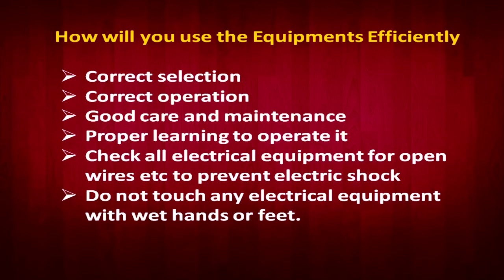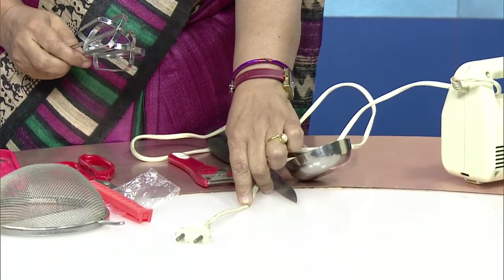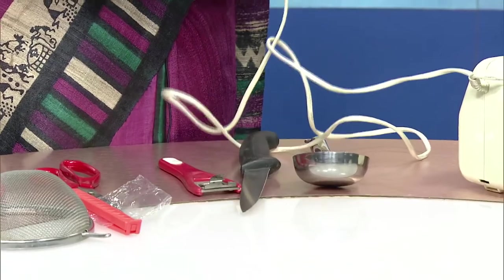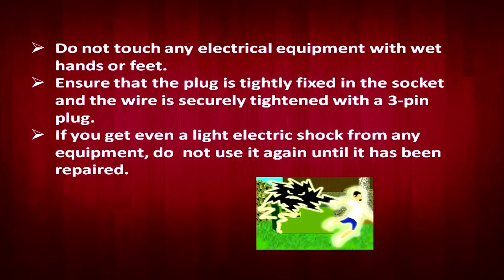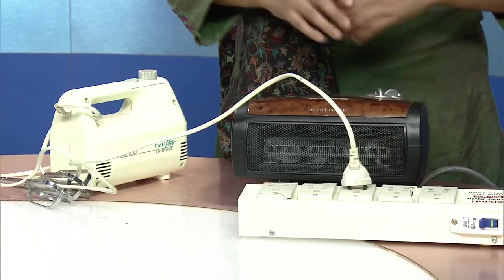Good care and maintenance is another important point. We cannot use and throw — we have to reuse things, so we must maintain them. In electrical equipment, check the plug point regularly. If a hot pan is accidentally placed on the wire in the kitchen, the wire insulation will be damaged, so equipment should be cleaned and repaired before use. Do not touch any equipment while it is functioning with wet hands. Ensure the plug is tightly fixed in the socket so electric current is supplied directly and short circuits are prevented.